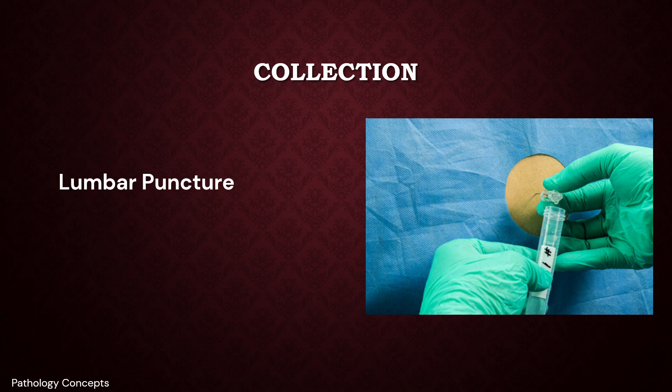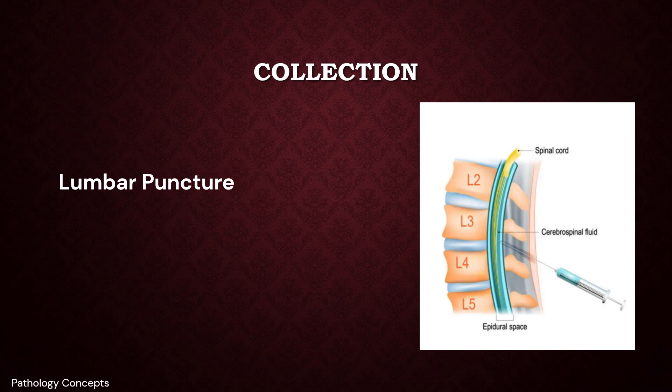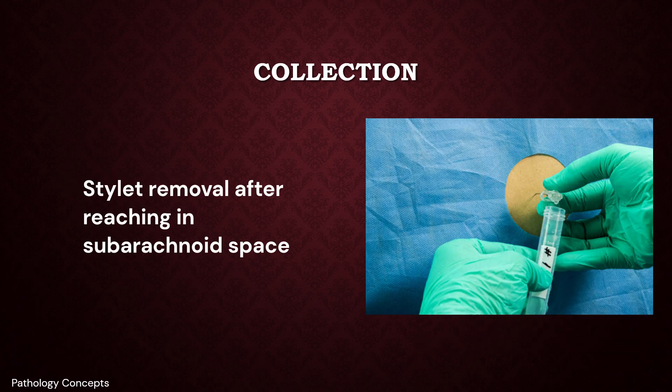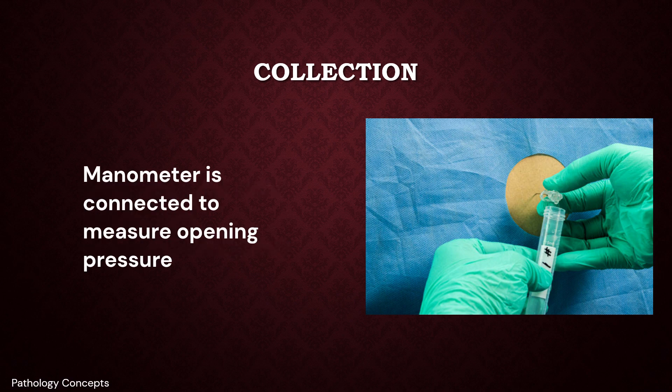Lumbar puncture can be performed either in lateral or sitting posture, usually under sterile precautions. A 20 to 24 gauge spinal needle is inserted after identifying the lumbar L2-L3 or L3-L4 space and local anesthetic infiltration. Once the spinal subarachnoid space is identified using loss of resistance, controlled removal of the stylet is done to prevent excessive drainage. A manometer can be connected if CSF opening pressure measurement is planned.